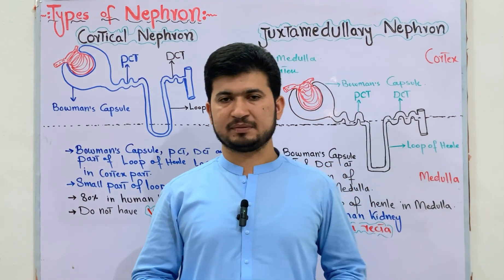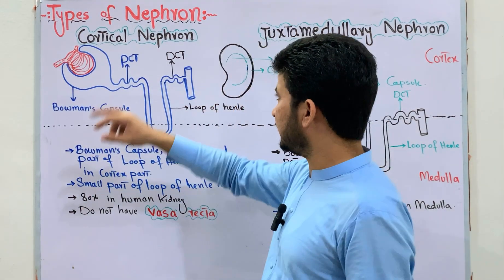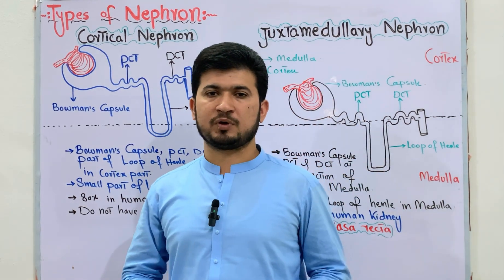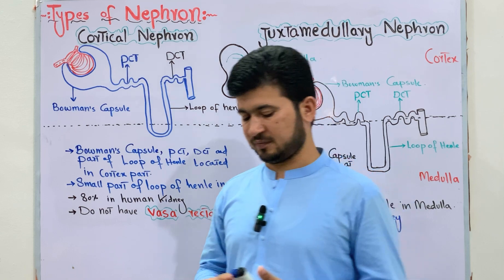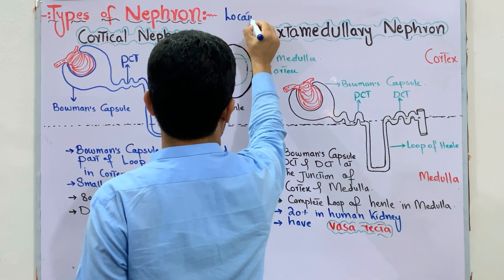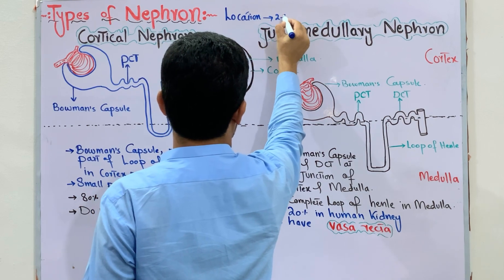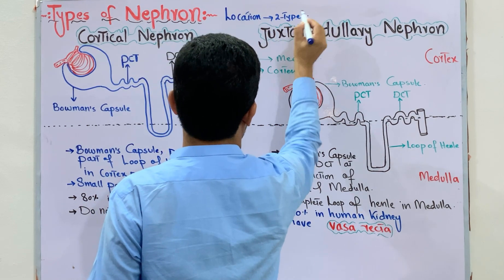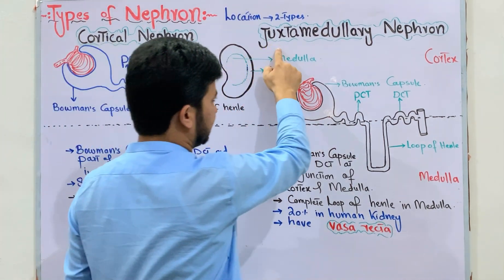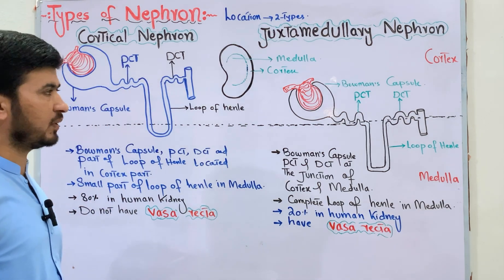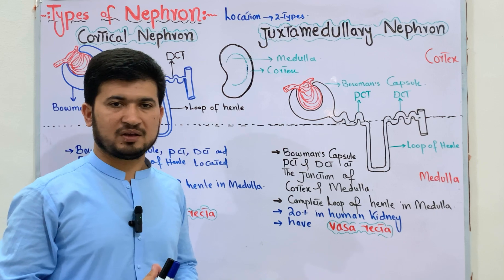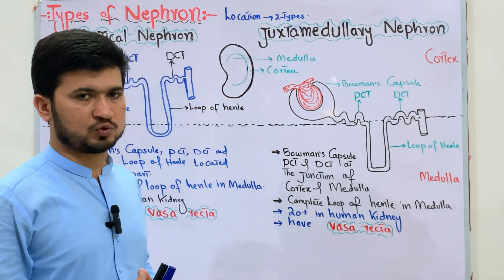As-salamu alaykum viewers. Today's topic of discussion is the types of nephrons. The nephron is of two types based on its location: the cortical nephron and the juxtamedullary nephron.